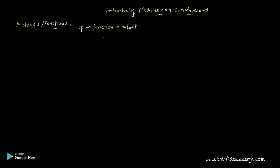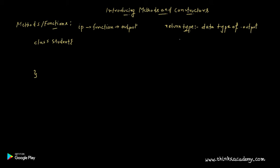We are going to create a function in Java. In the previous tutorial we created a class Student, and in this tutorial we are going to create a function inside that class. A function can have some return type, which is just the data type of the output. It can also have a name and some input values. We are going to create a function called void display.